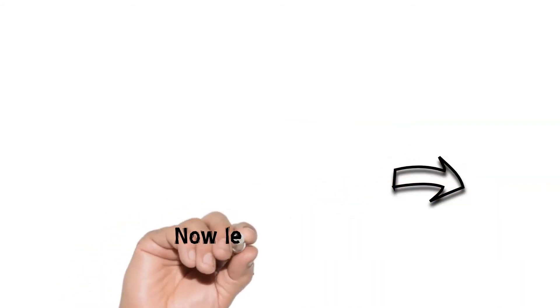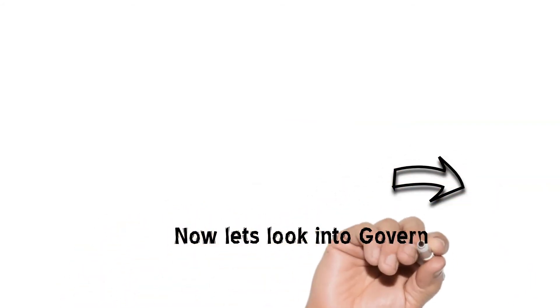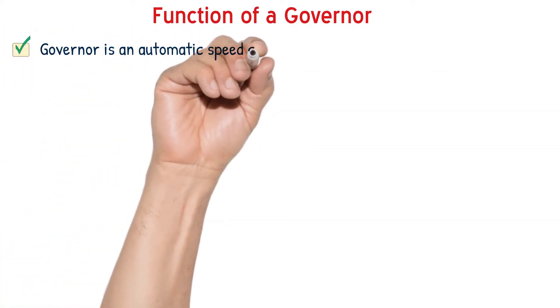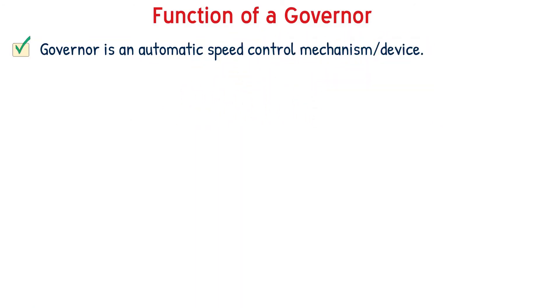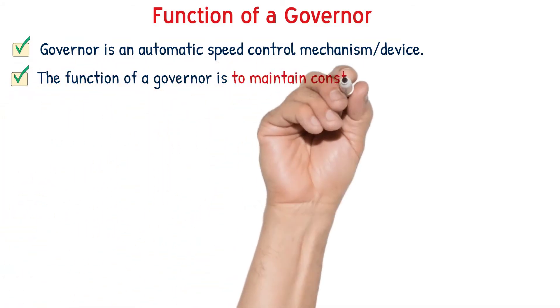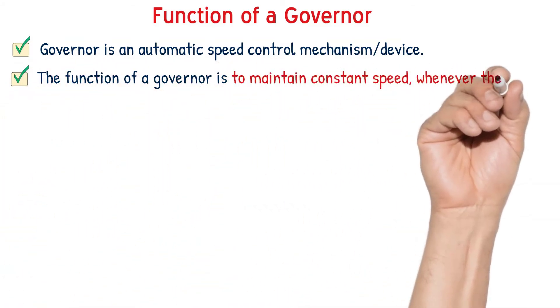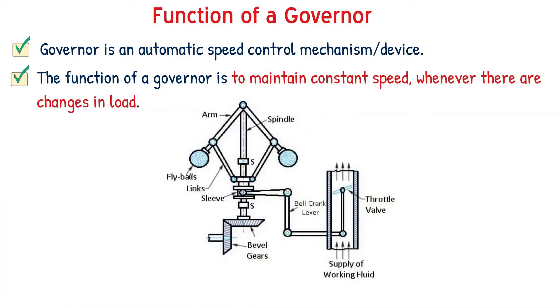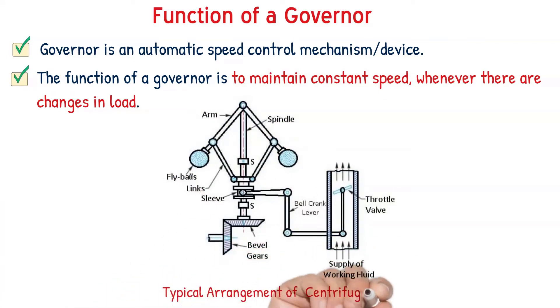Now we shall see how a governor functions. A governor is an automatic speed control device, also known as a mechanical feedback device. A flywheel is used to reduce the fluctuation of speed within a cycle, whereas a governor is used to maintain constant speed whenever there are variations in load.